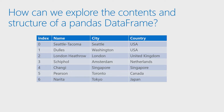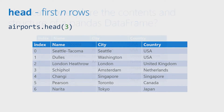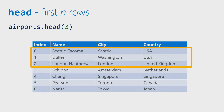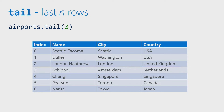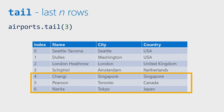So how can we go in and explore this? There's a whole host of different ways. A couple of the most common are head and tail. With head, we can indicate the number of rows from the top that we want to see. With tail, as you might expect, we can see the number of rows from the bottom. So head(3) is going to give us the first three rows, and tail(3) is going to give us the last three rows.